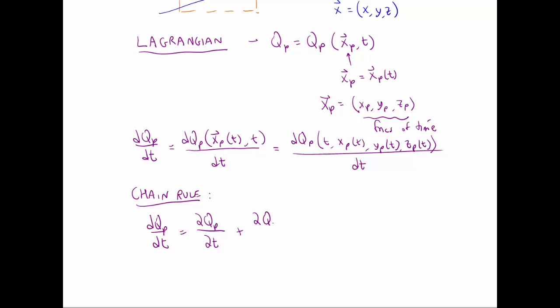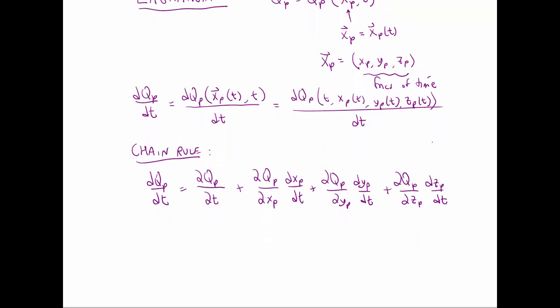So del qp del t plus, and then function of all the other variables, del qp del xp, but xp itself is a function of time. So dxp dt. Now we do that with the other variables as well. So we have del qp del yp dyp dt, and then the same thing with z. Note here that del is a partial derivative when you have a function of more than one variable. So d is a total derivative when you have a function of only one variable. So xp is a function only of t. So here we write that as a total derivative d, xp dt. But qp is a function of four variables, not just xp. So we have to use a del there. Let's call this equation one, and that we need to think about some more.